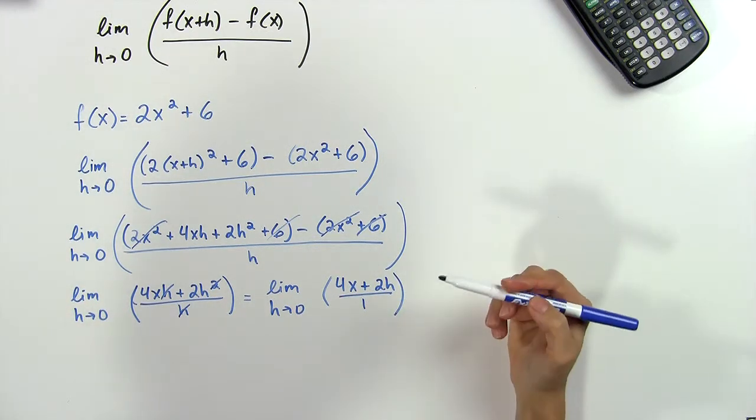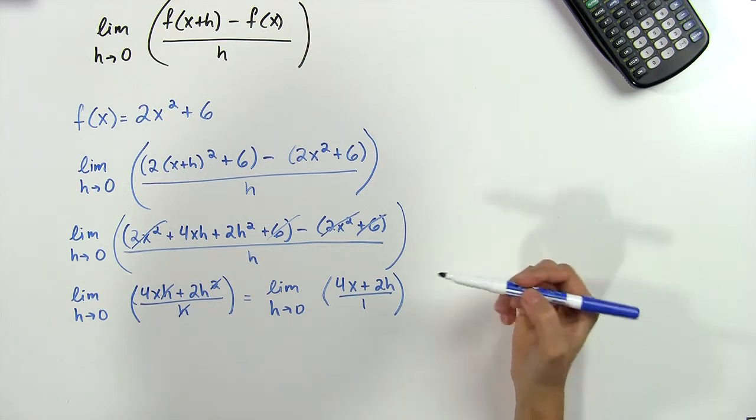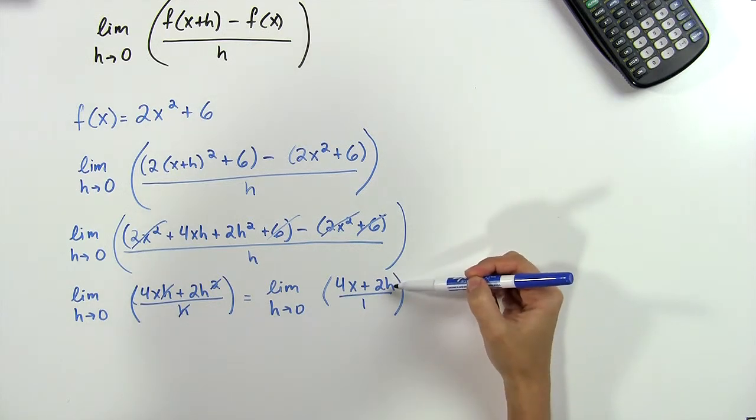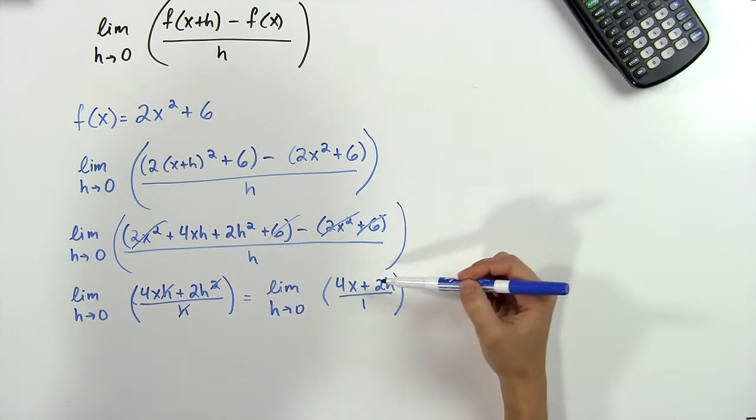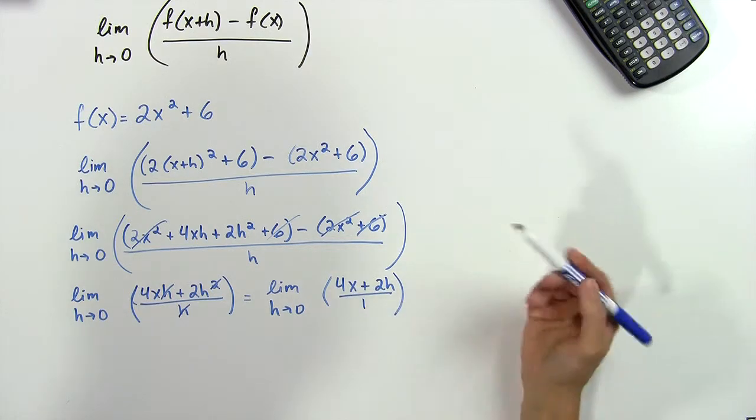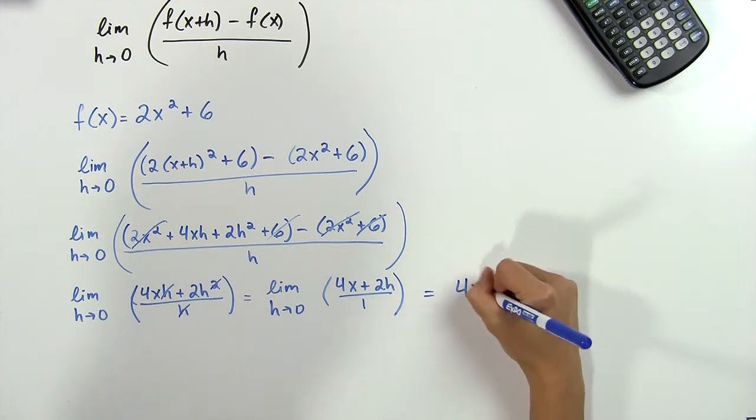Now we can evaluate our limit, since this won't be indeterminate as there's only one h in the top. So if we plug 0 in for h, we'll just get 4x plus 0 over 1, or just 4x.